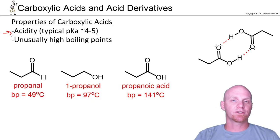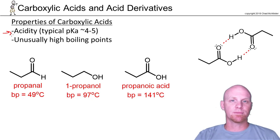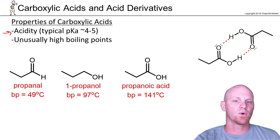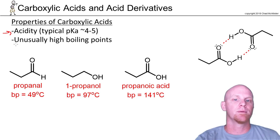Now if you've got electron withdrawing groups nearby, you can definitely make them more acidic and lower that pKa, but for just a typical aliphatic carboxylic acid, the pKa is in the 4 to 5 range. But that's something we've already learned in the past — I just wanted to bring that back up.